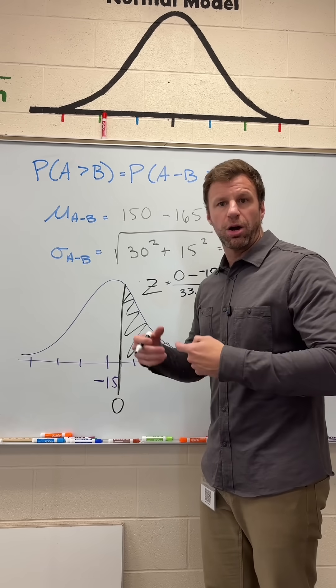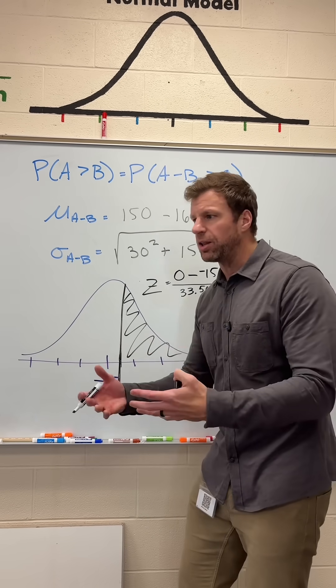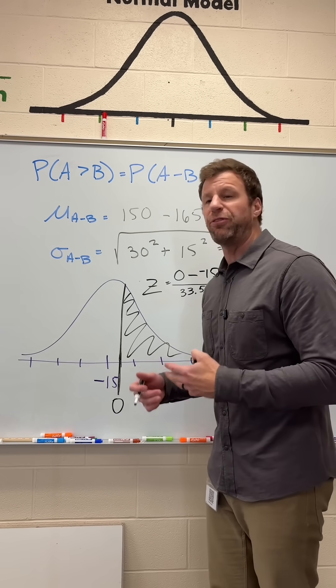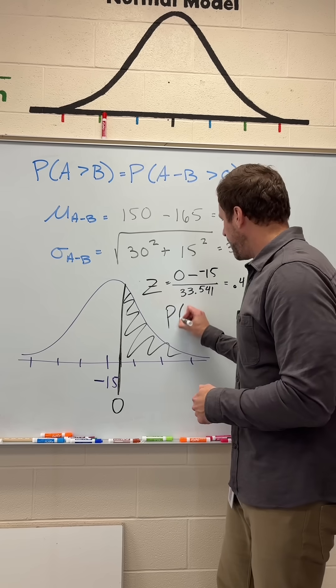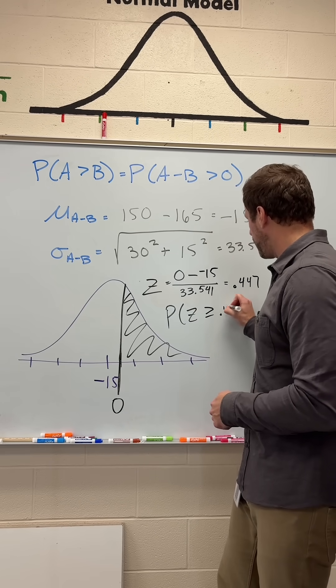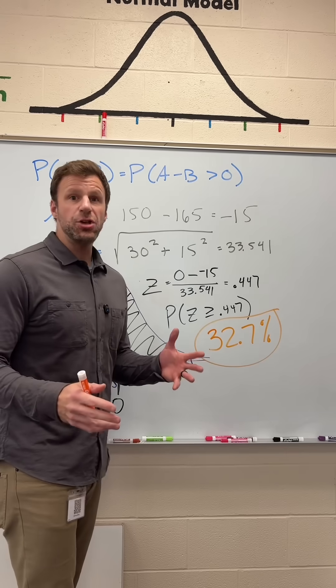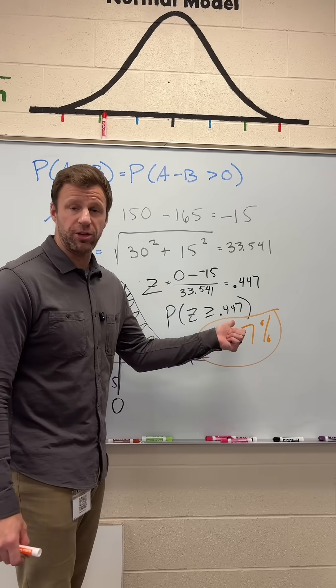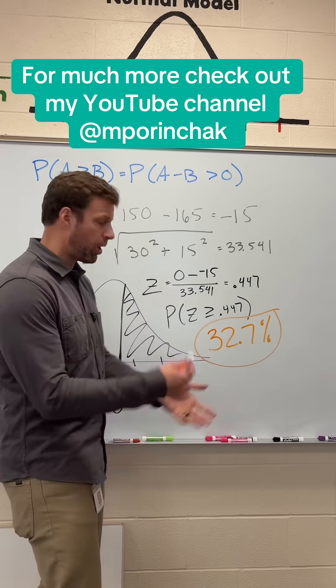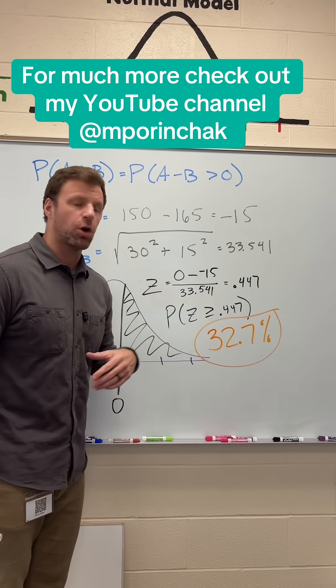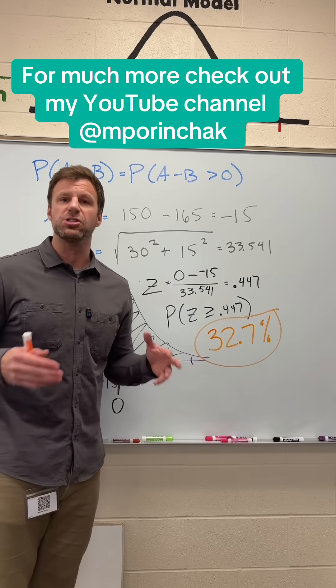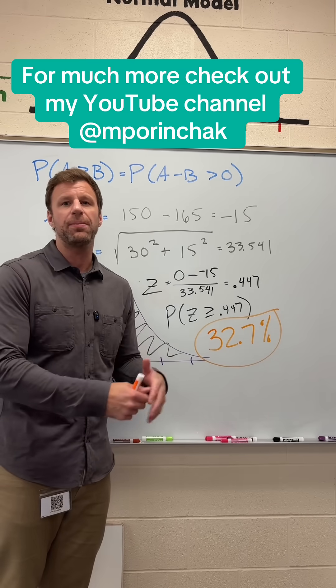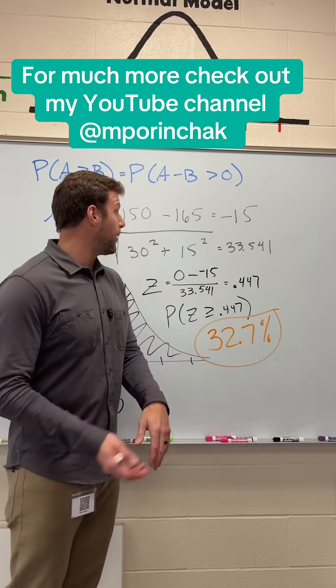So now we're going to go to our calculator or technology or a z-table to figure out the probability that a z-score is greater than or equal to 0.447. And using technology or z-table, we find out that the probability that a z-score is greater than 0.447, which is zero on our distribution, is 32.7%. So there it is. The probability that Andy does better than Bob is 32.7%. Pretty good problem.